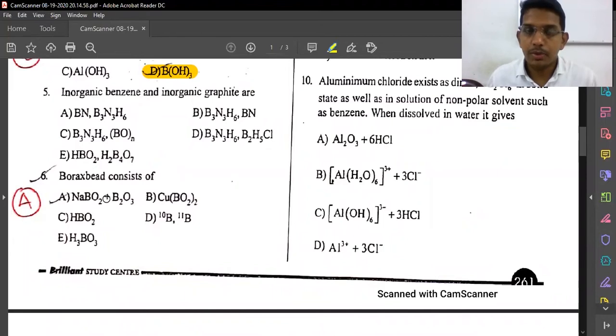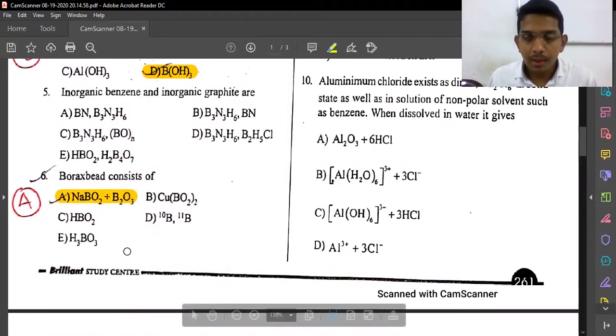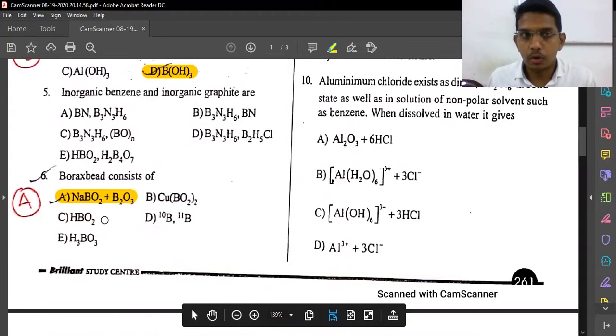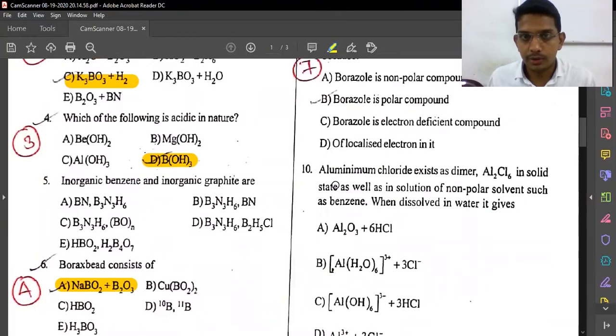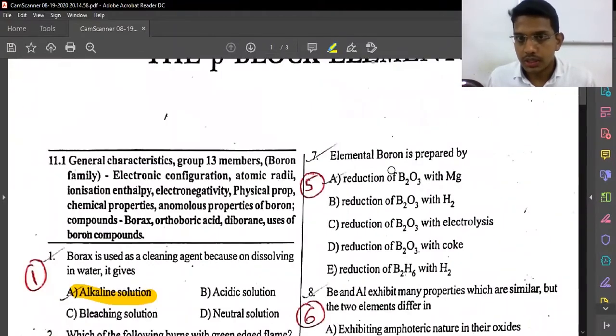Borax bead consists of: Borax bead test is for transition metals identification. Borax bead is tested. Borax bead is Na₂B₄O₇ plus B₂O₃.